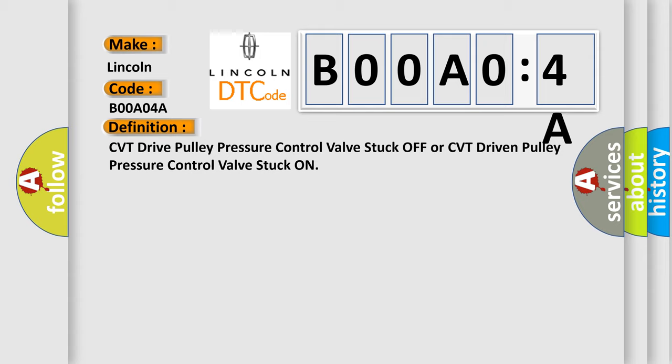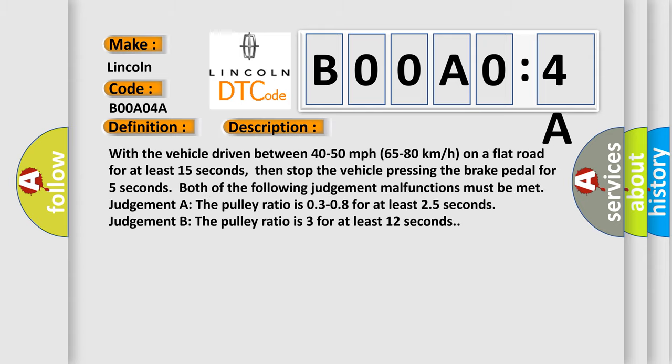And now this is a short description of this DTC code. With the vehicle driven between 40 to 50 miles per hour, 65 to 80 kilometers per hour on a flat road for at least 15 seconds, then stop the vehicle pressing the brake pedal for 5 seconds. Both of the following judgment malfunctions must be met. Judgment A: The pulley ratio is 0.3-0.8 for at least 25 seconds. Judgment B: The pulley ratio is 3 for at least 12 seconds.